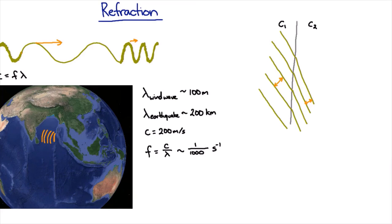So when you're going through a boundary between two different speeds, what you find is that the wave changes direction, and that's called refraction.